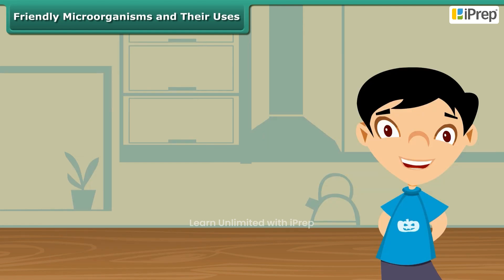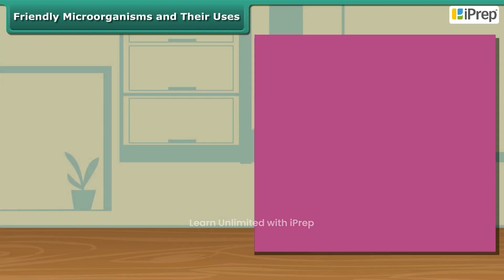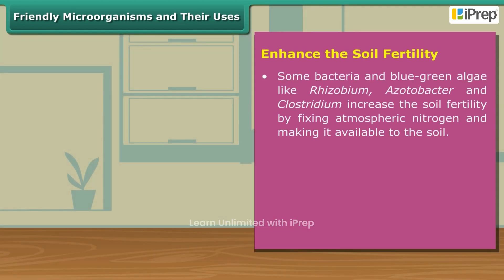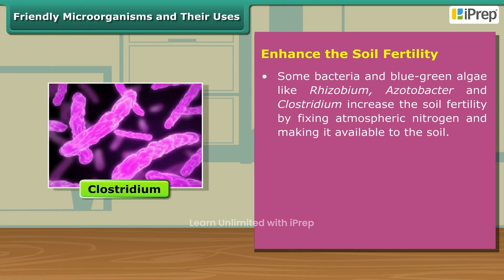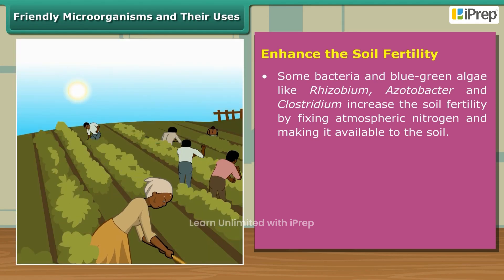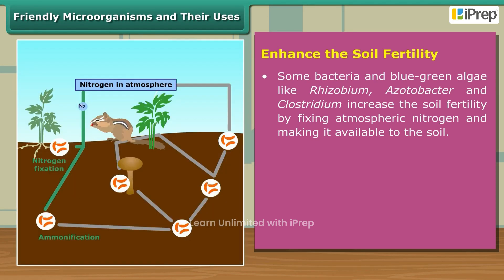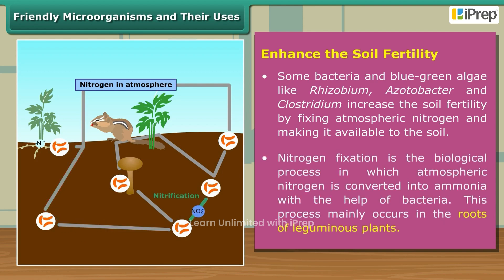Some bacteria and blue-green algae like Rhizobium, Azotobacter, and Clostridium increase soil fertility through the atmospheric nitrogen fixation process. Nitrogen fixation is the biological process in which atmospheric nitrogen is converted into ammonia.